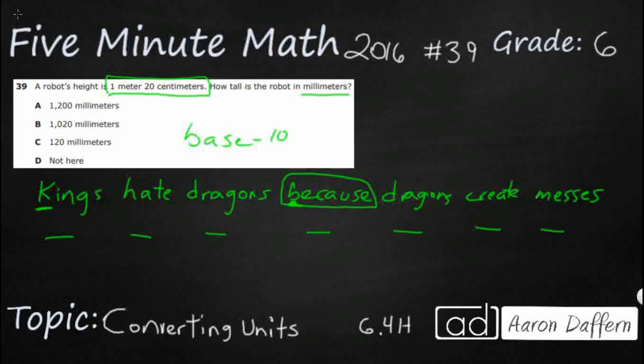So this base right here means it works for all three different types. So we can either use meters and put a little line underneath that. So meters, liters, which is a capital L, or G for gram. Just depends on whether we're measuring distance or we're measuring mass or measuring capacity.